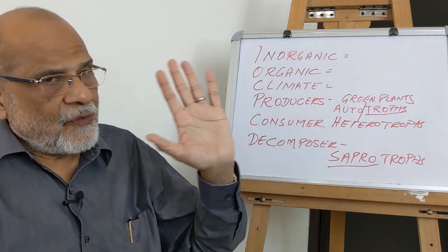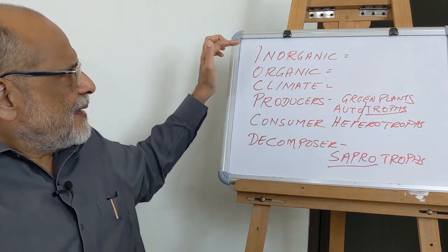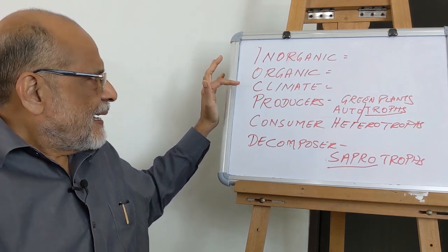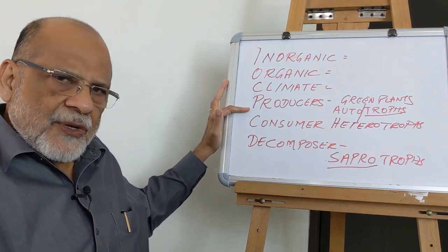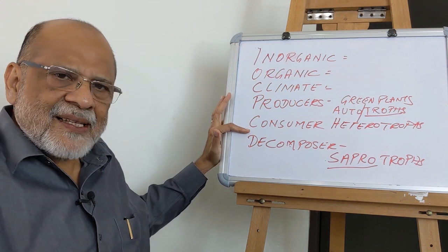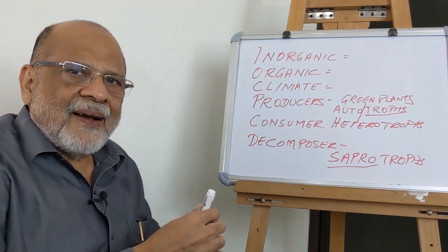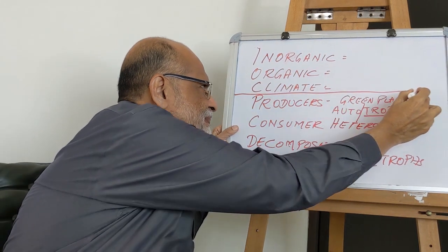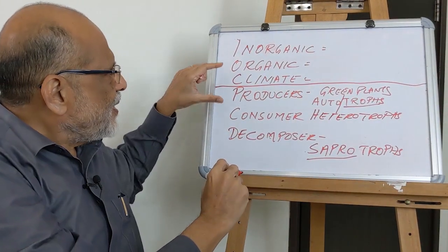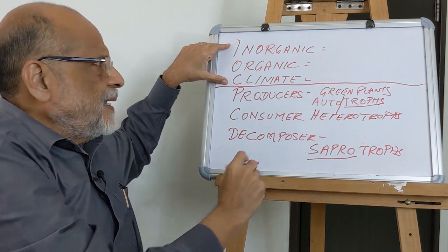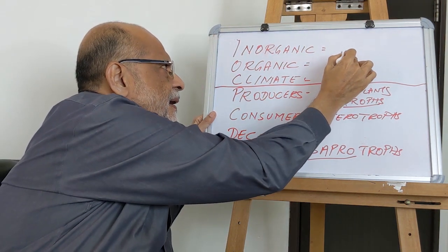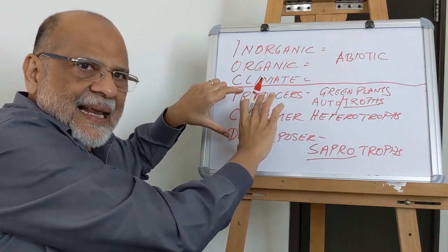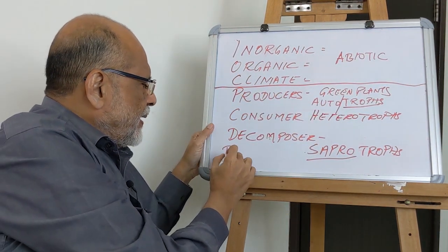Is that clear? So six very important concepts in the ecosystem. Inorganic substances, organic compounds, climate regime, producers, consumers, decomposers. What do we do human beings? We put a line in between. And we call the top three as abiotic, and we call the last three as biotic.